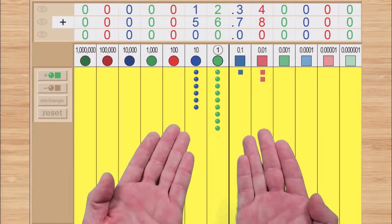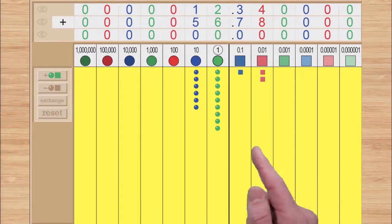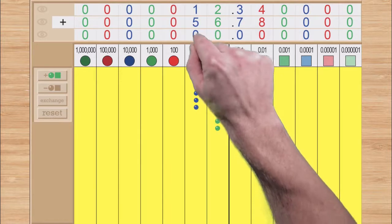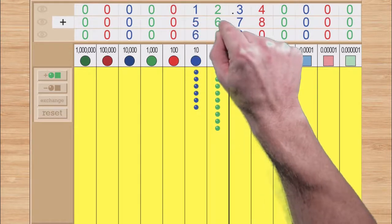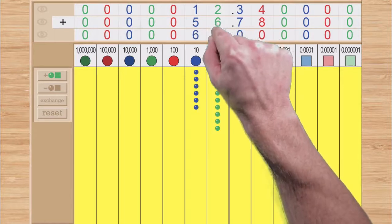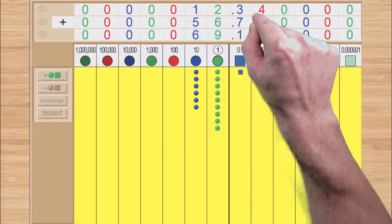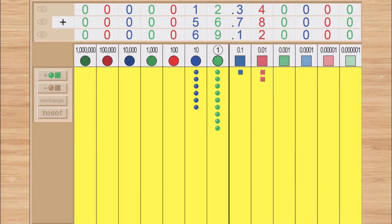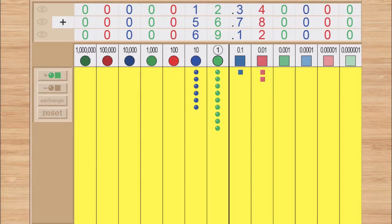Once complete, you can symbolize your answer by tapping and cycling the cards in the third row. 69 and 12 hundredths. Fantastic!